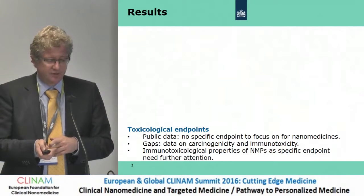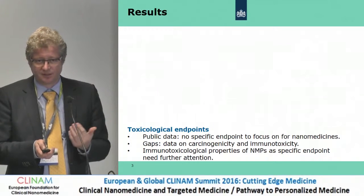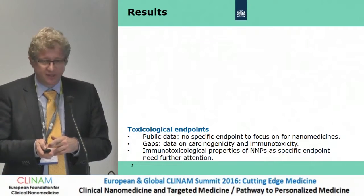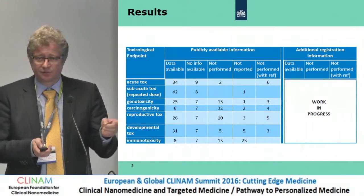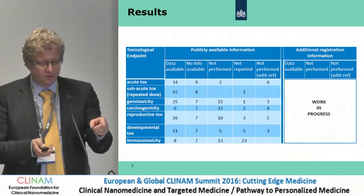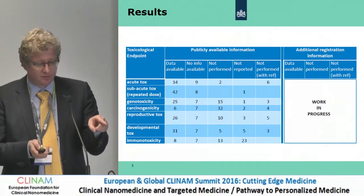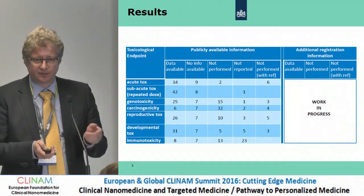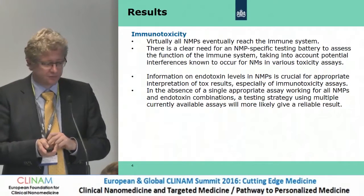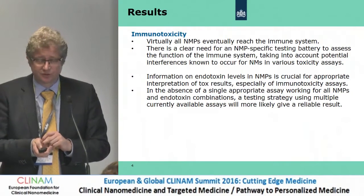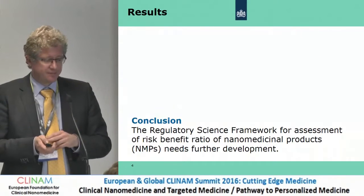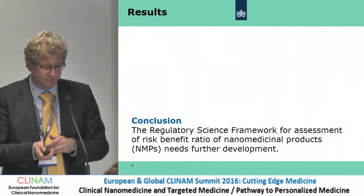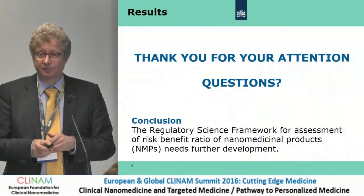For the toxicological endpoints, we didn't identify any specific endpoint most triggered by nano-specific properties, but we do see data gaps for carcinogenicity and immunotoxicity — and especially immunotoxicological properties need further attention. We believe that virtually all particles eventually reach the immune system, and there is a clear need for a specific testing battery to assess immune system function. We also looked at endotoxin levels, which is especially important in relation to immunotoxic testing. The conclusion is that the regulatory science framework for assessment of the risk-benefit ratio of nanomedicinal products needs further development.